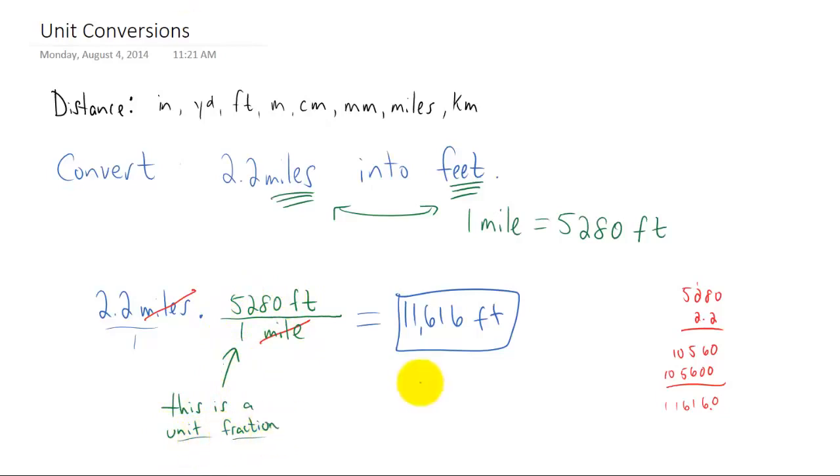And just to kind of jog your memory about unit fractions, back in the day we could have a fraction like 2 thirds. Maybe we wanted to find a common denominator with another fraction. We were allowed to multiply this fraction by a unit fraction, 2 over 2. And when we do that, it turns our 2 thirds into 4 sixths. So that's just another example of where we've used a unit fraction in math before.